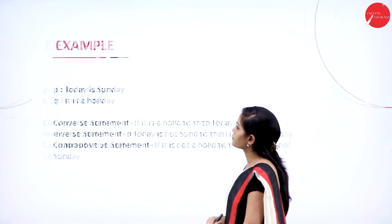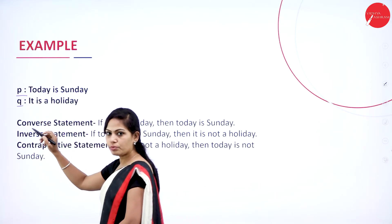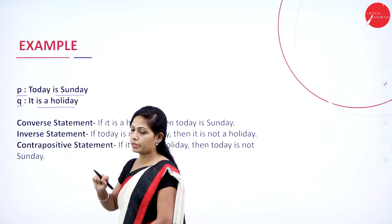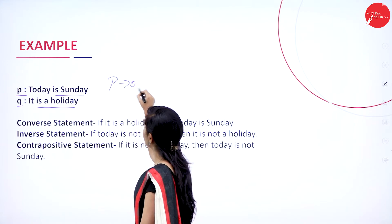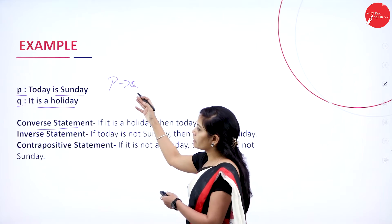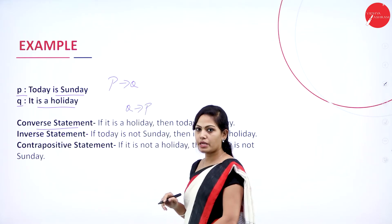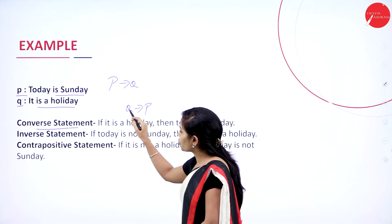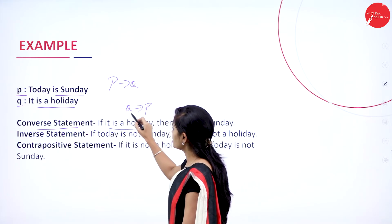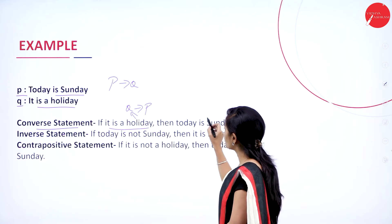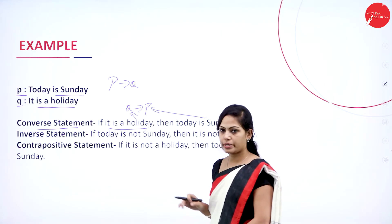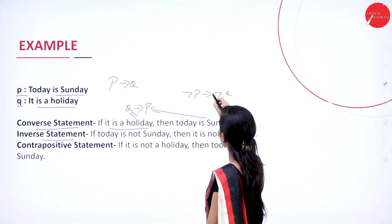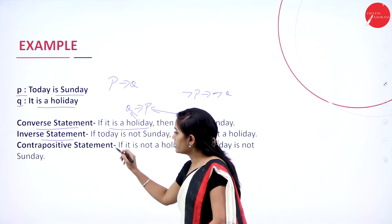Let us understand with an example. P: 'Today is Sunday.' Q: 'It is a holiday.' The conditional statement is P → Q. The converse is Q → P: 'If it is a holiday, then today is Sunday.' The inverse is ¬P → ¬Q.